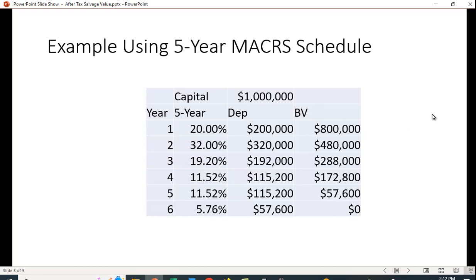Let's take a look at an example using the five-year MACRS depreciation schedule. If you don't know what that is, it's an accelerated depreciation schedule that the IRS allows firms to use so they can depreciate at a faster rate than, for example, straight line depreciation.